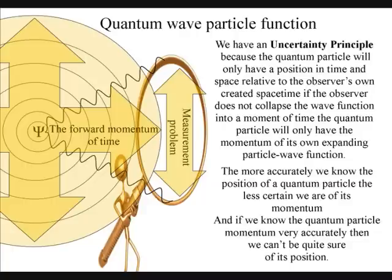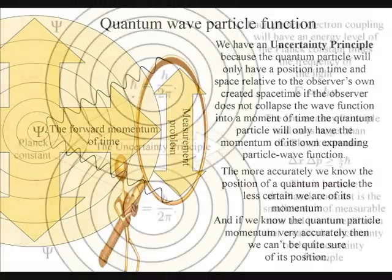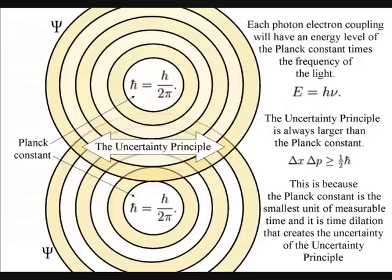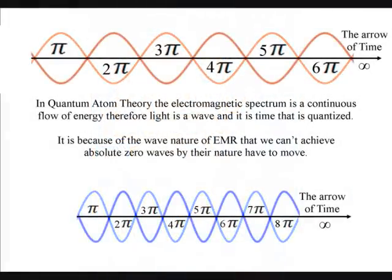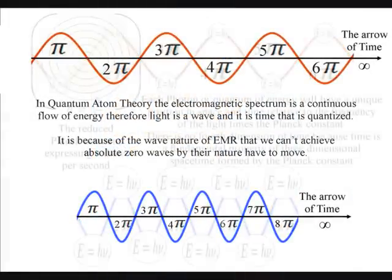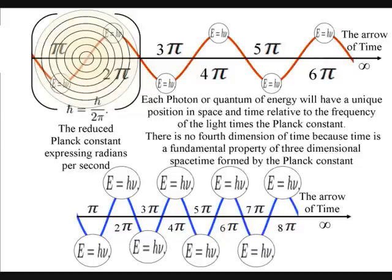Each new photon can be measured either as a point in space over a period of time, or as an area of space at a moment in time, but not as both. This is because the observer is always in the moment of now, collapsing the waves of light into new photons of energy that will only be relative to the wavelength of the light and the position and momentum of the observer.